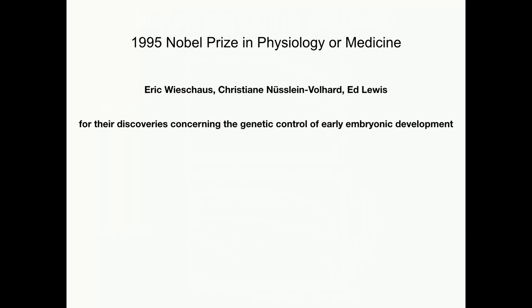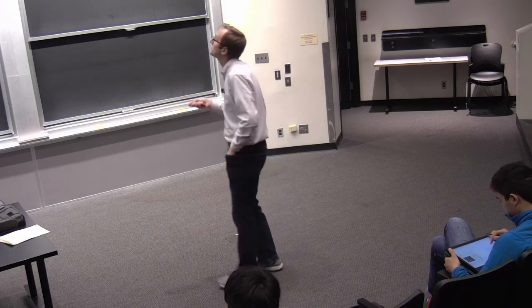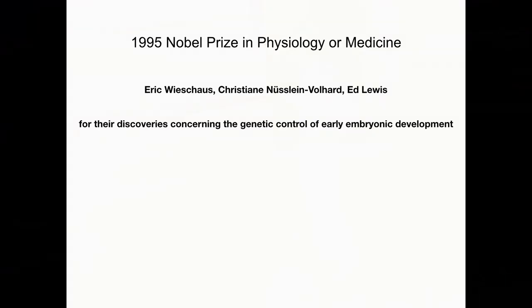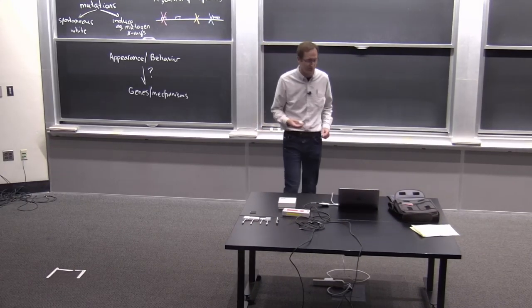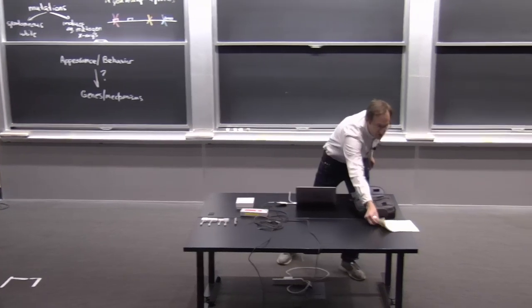Now I want to talk about how one might find the needle in the haystack — how to have a concerted effort to identify genes that function in a given process. I'm going to tell you about work done by Eric Wieschaus and Christiane Nüsslein-Volhard, because they did one of the more famous genetic screens, and they won the Nobel Prize for their results in 1995.